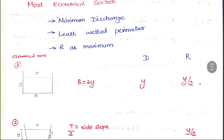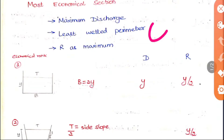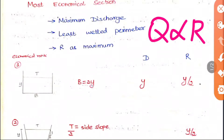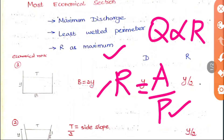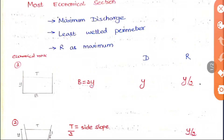For discharge, we have two formulas: Manning's formula and Chezy's formula. Keeping the constant and slope constant, the hydraulic mean radius r changes, so discharge q is proportional to r. If you increase r, discharge increases. The most economical section has maximum r. Since r equals area divided by wetted perimeter, to increase r you decrease the perimeter. So the most economical section has maximum discharge, least wetted perimeter, and maximum r.